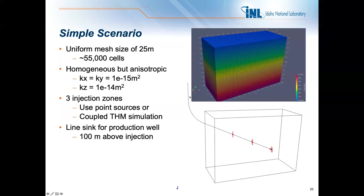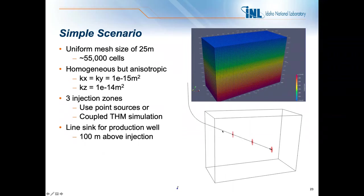The model domain is shown graphically with the trajectory of 16A, with three injection zones — zone one at highest elevation, zone two, and zone three. The initial temperature distribution is shown with 25-meter grid spacing, leading to about 55,000 cells. We used a homogeneous anisotropic permeability of 10e-14 in the vertical direction and 10e-15 in the horizontal directions. For comparison, we ran both point-source and coupled-THM simulations: the point sources divided the total flow equally at fixed temperature of 50 degrees C, while the coupled THM was free to apportion flow as it determined.